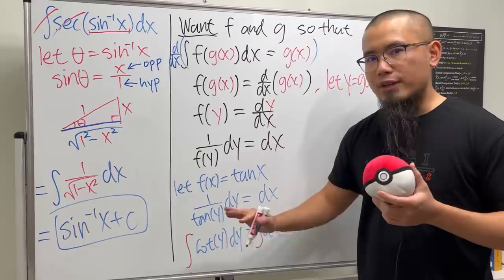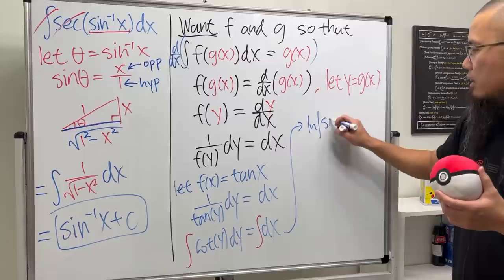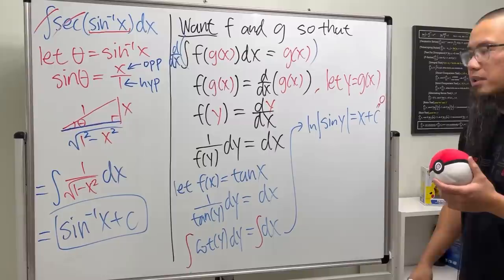And of course now we can integrate both sides. And if you would like you can look at this as cosine of y over sine of y and do u-sub, and either way you will end up with ln absolute value of sine of y inside like this. And then of course the right hand side is equal to x plus C.